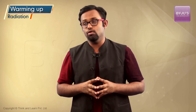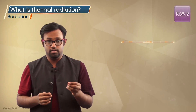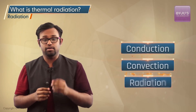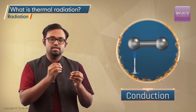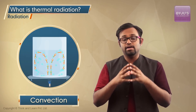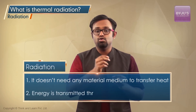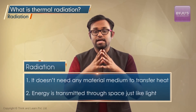In previous classes we have learned that heat can transfer through conduction, convection, or radiation. Conduction is when two bodies are in physical contact and heat flows from one to another. Convection is when matter itself moves and transfers heat. We will discuss these in detail in this chapter. But now let's talk about radiation. Radiation doesn't need any material medium to transfer heat. Energy is transmitted through space just like light — in fact, exactly like light.